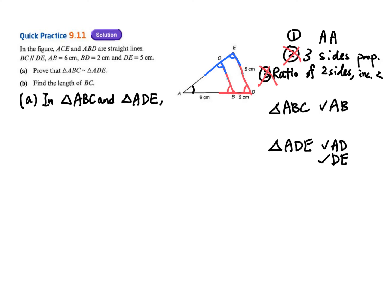Fill in the blanks. Angle ACB equals angle AED — reason: corresponding angles, since BC parallel to DE.